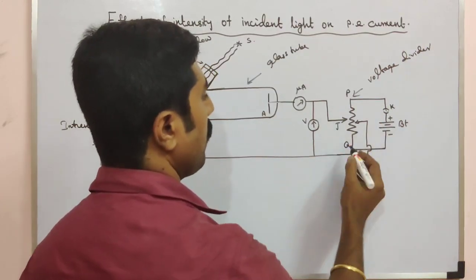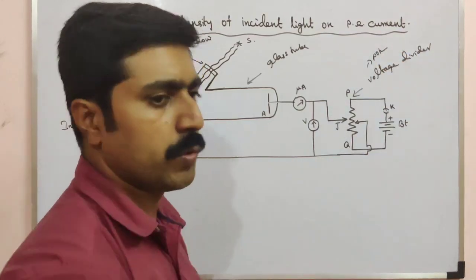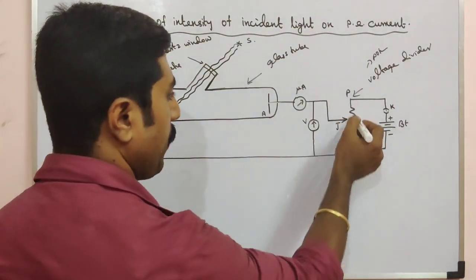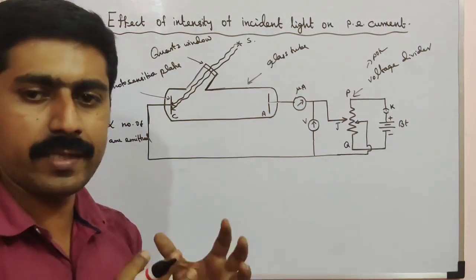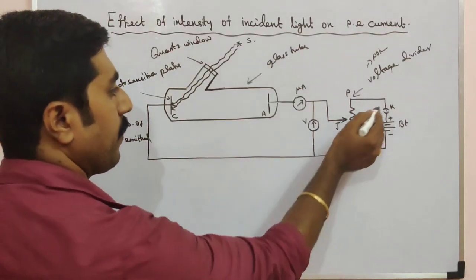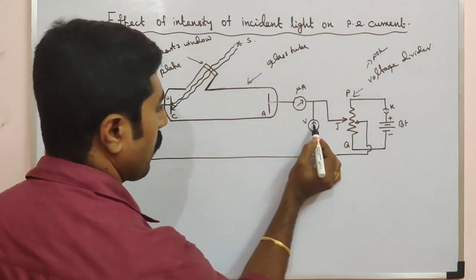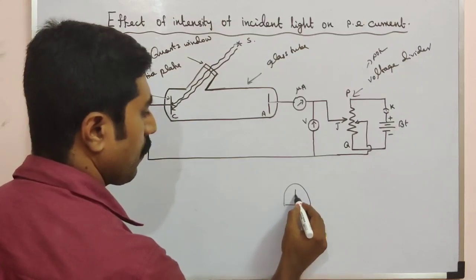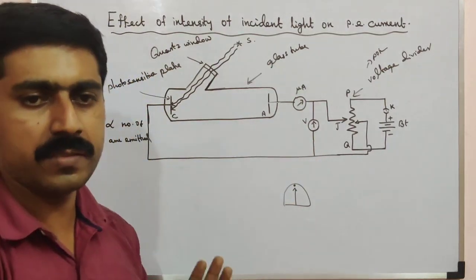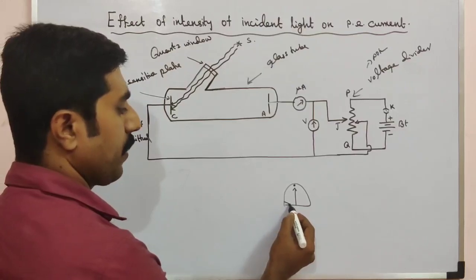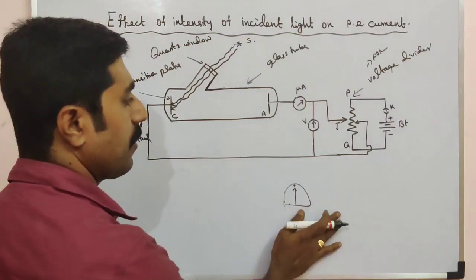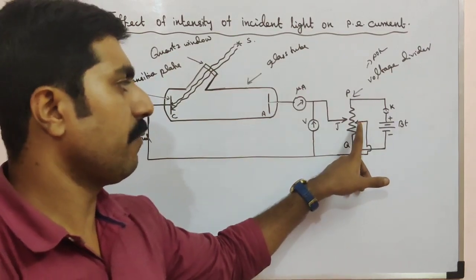The end of the anode is joined to a voltage divider setup. The voltage divider — that is, the potential divider — provides a high voltage. We need to maintain the exact negative potential to the cathode and the positive potential to the anode. The voltmeter and ammeter needles start at zero, meaning null deflection initially.